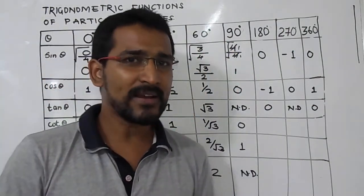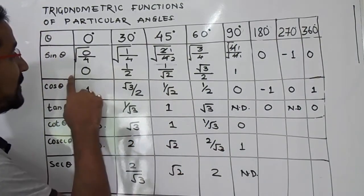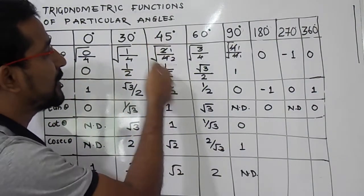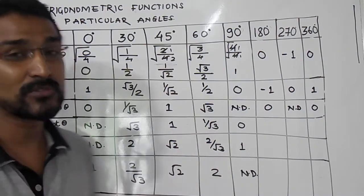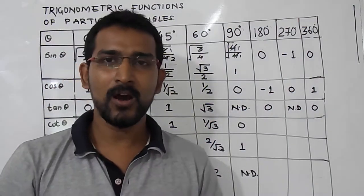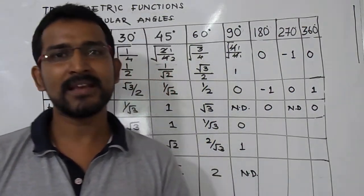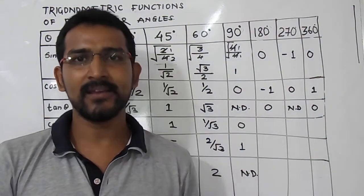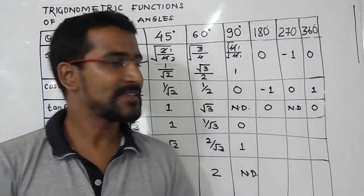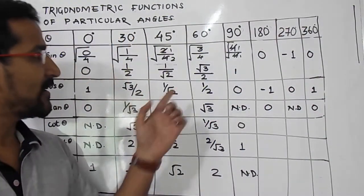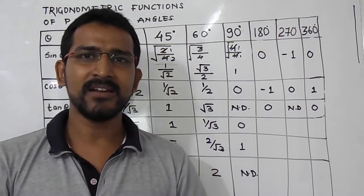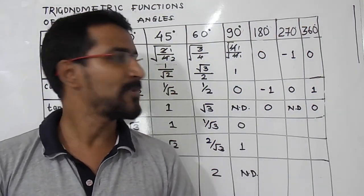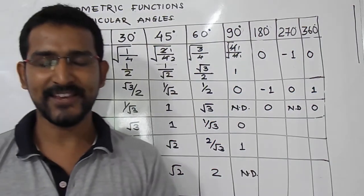This is how you make the table of these particular angles. How we are getting sin 0° = 0, sin 30° = 1/2, sin 45° = 1/√2, sin 60° = √3/2 — we will see that in the next session by making a unit circle, which will also cover higher angle values. Hope it will be helpful for you. Thank you.